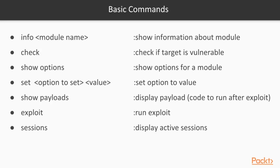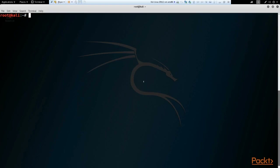`show options` will show the options you may need to set for a module. `set [option] [value]` sets an option to a value. `show payloads` will display payloads — a payload is code to run after an exploit is executed, often code to open a shell on the target. `exploit` runs the exploit you have chosen for a particular module. `sessions` will display active sessions.